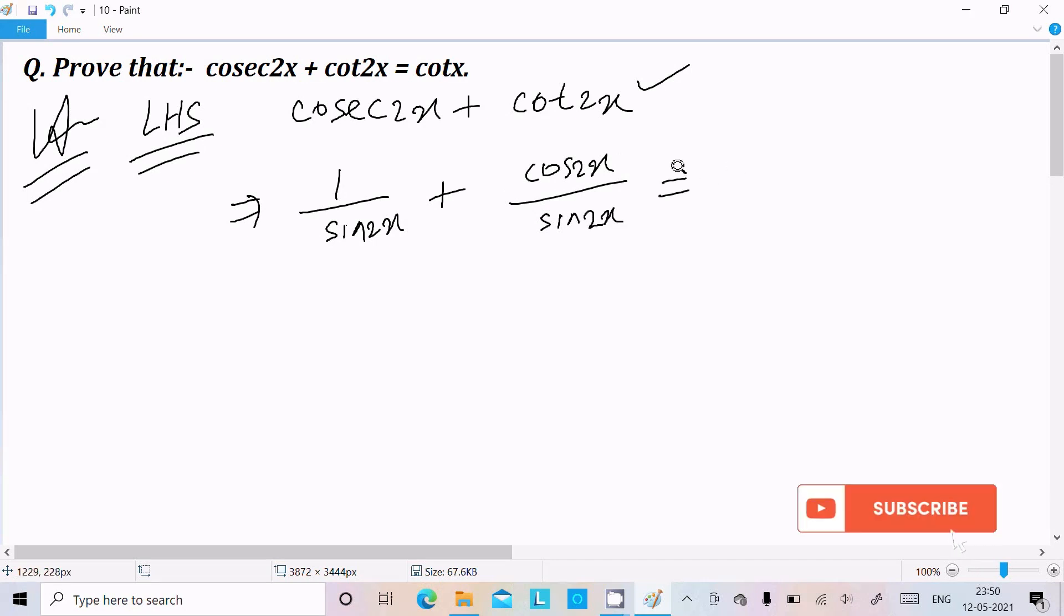Now thereafter, sin 2x is the common or LCM and here 1 plus cos 2x. Now thereafter, so we can write 1 plus cos 2x.